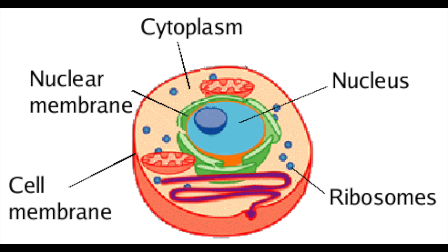Then there's the cell membrane. Do remember that an animal cell doesn't have a cell wall — it does have a cell membrane, but not a cell wall. We'll talk about that later when we discuss plant cells. The cell membrane controls what substances enter and leave the cell; it's quite thin.